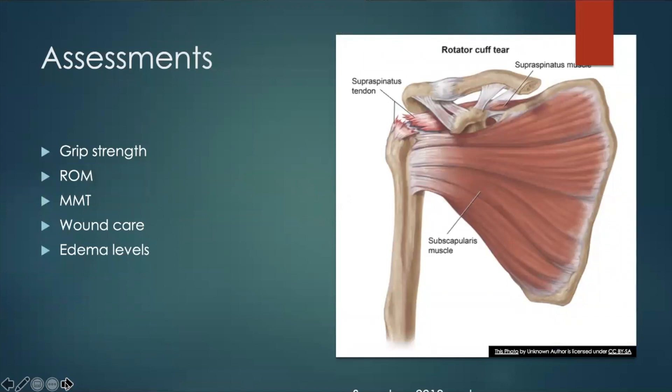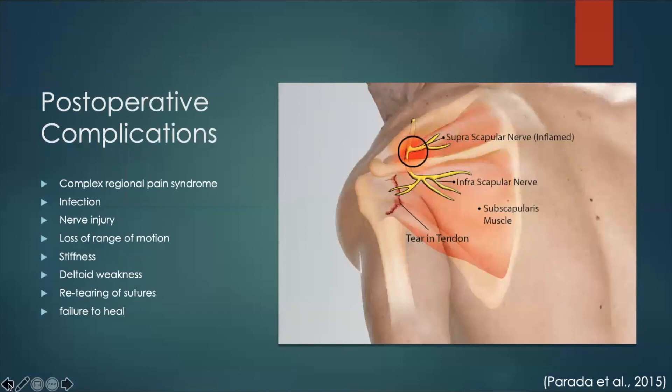The assessments typical for rotator cuff repairs look at grip strength, range of motion, and manual muscle testing to track the client's strength and movement. Other assessments address wound care and edema in the area to watch for infection and monitor the healing process. Assessing these areas allows clinicians to be well informed of the client's healing process and to use good clinical judgment when making decisions about the client's plan of care.